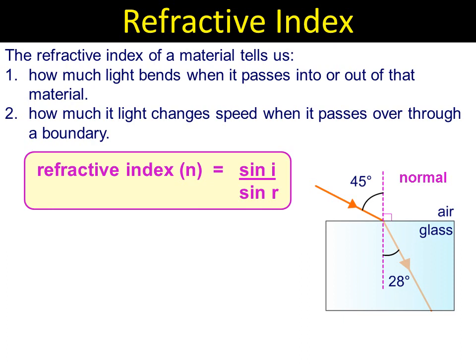So I'd use i and r there. In this case, i is 45, r is 28, for what that gives us. Refractive index is sine 45 divided by sine 28 degrees. Use your calculator, make sure it's not set to radians. And we're getting out to 1.5.